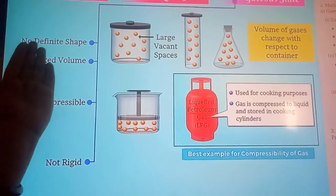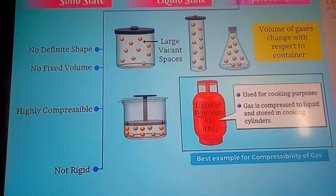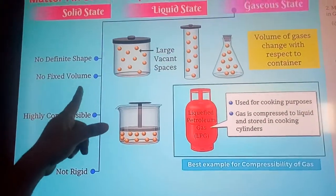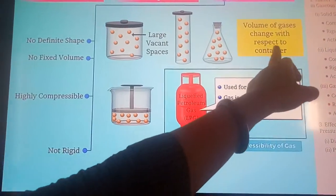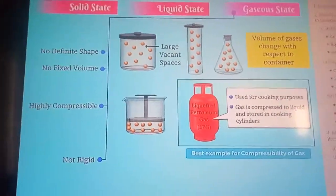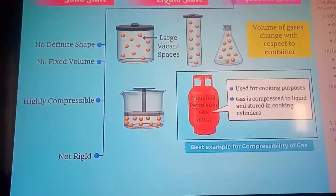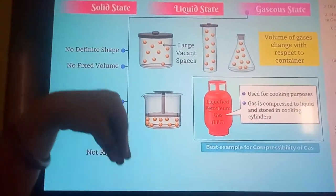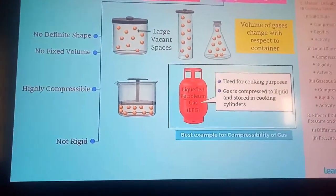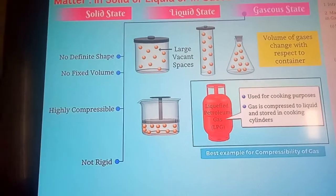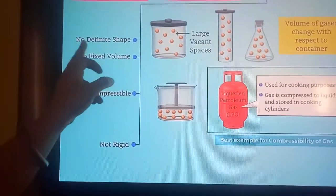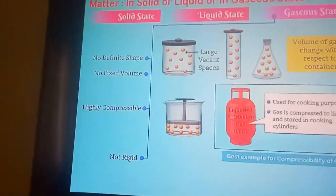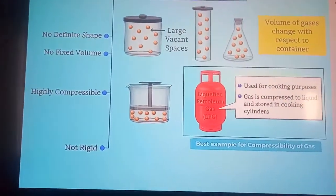Gas particles keep moving and hitting the surfaces of the vessel — they don't stay stagnant at one place. So gases have no definite shape. Also, gases do not have a fixed volume — the volume of the gas changes with respect to the container. Whatever the size of the container, that is the volume the gas occupies.